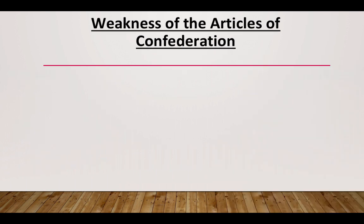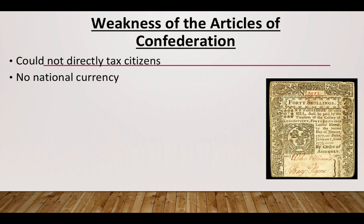Now let's jump over to the weaknesses of the Articles of Confederation — there are quite a few. The federal government could not directly tax citizens; they could ask states and citizens to pay taxes but had no enforcement. If you were not compelled to pay taxes and the government just asked you, would you voluntarily hand money over? Probably not — and that's what most Americans were thinking. The federal government could really only get revenue from selling land in the Northwest Territory.